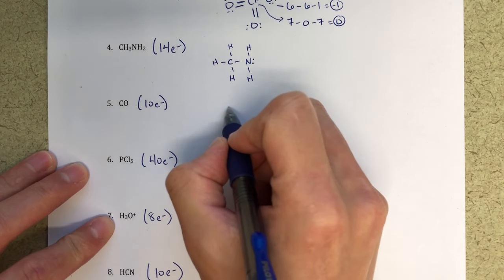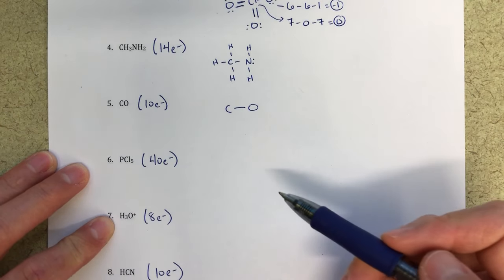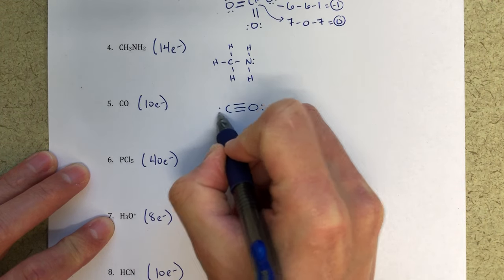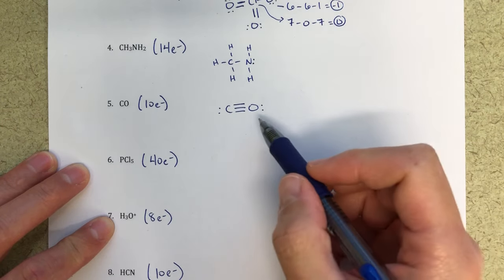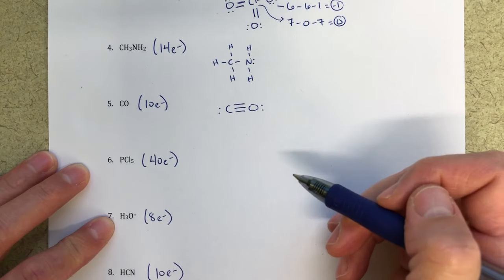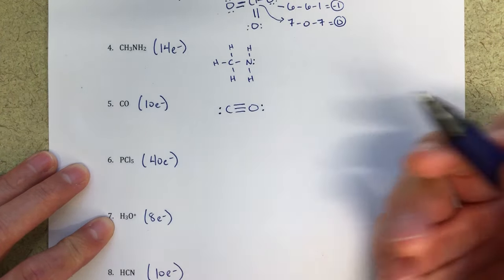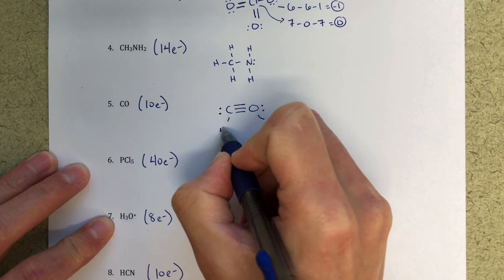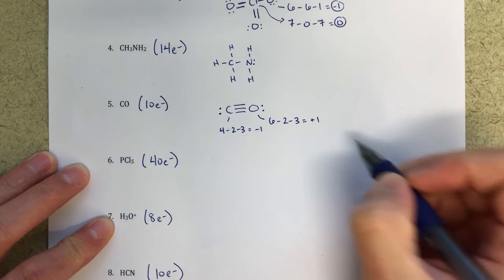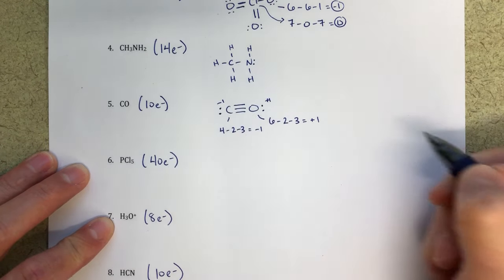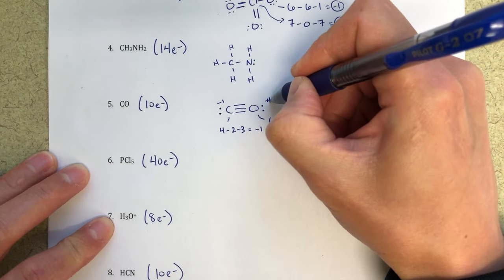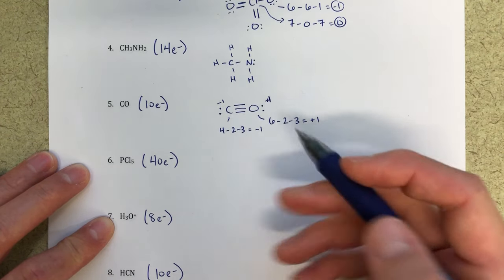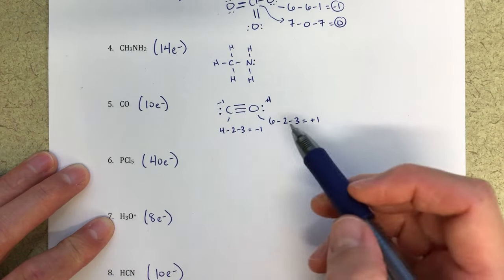CO has 10 electrons. The skeleton structure is just C and O, and we need to fill in the remaining eight electrons. The best structure uses a triple bond. I must follow the octet rule for carbon and oxygen. Calculating formal charges: for oxygen, six minus two minus three equals plus one; for carbon, four minus two minus three equals minus one. So oxygen has a formal charge of plus one and carbon has minus one. This is the best structure we can draw while minimizing formal charges — we don't want charges of plus or minus three.